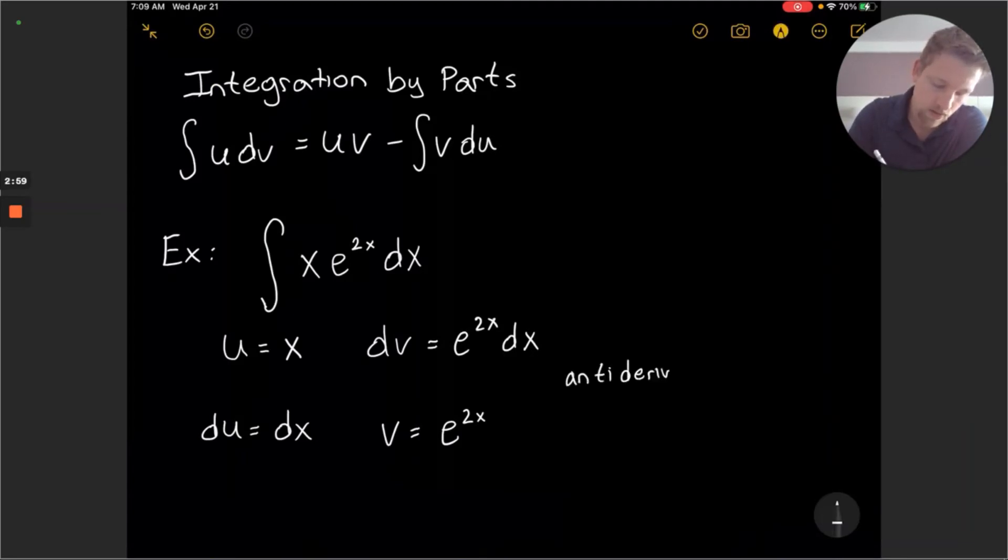we want to divide by that constant. So the derivative of the exponent here is 2. So we'd like to divide by that constant.